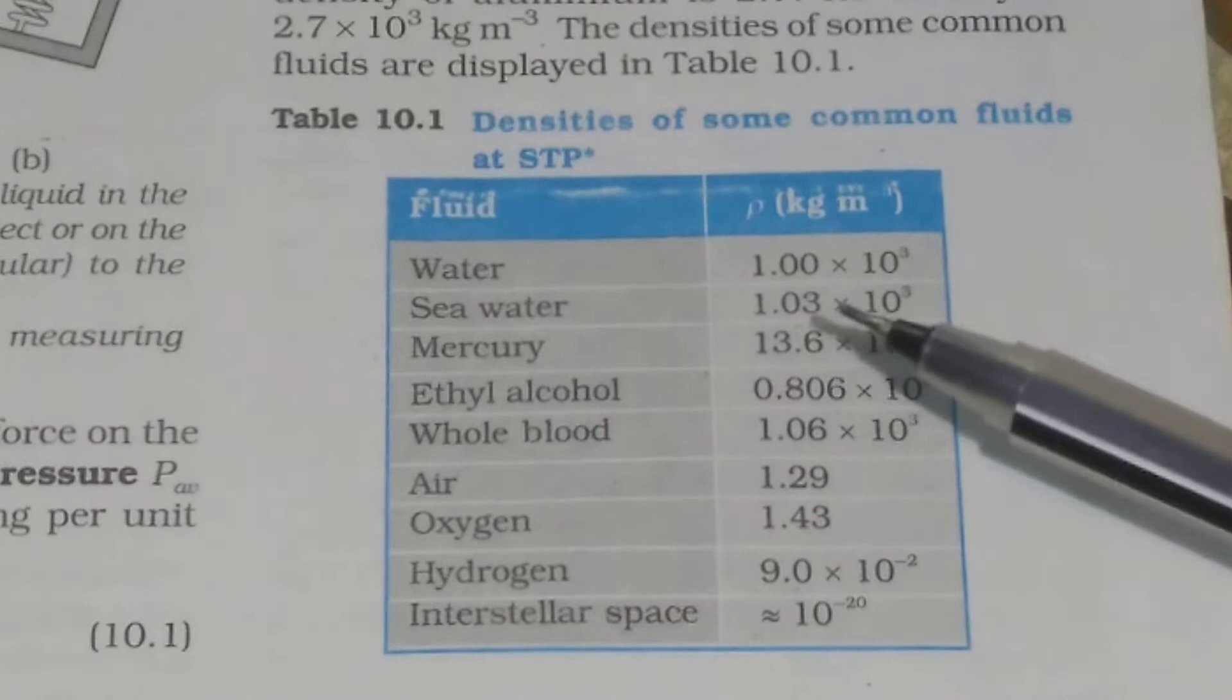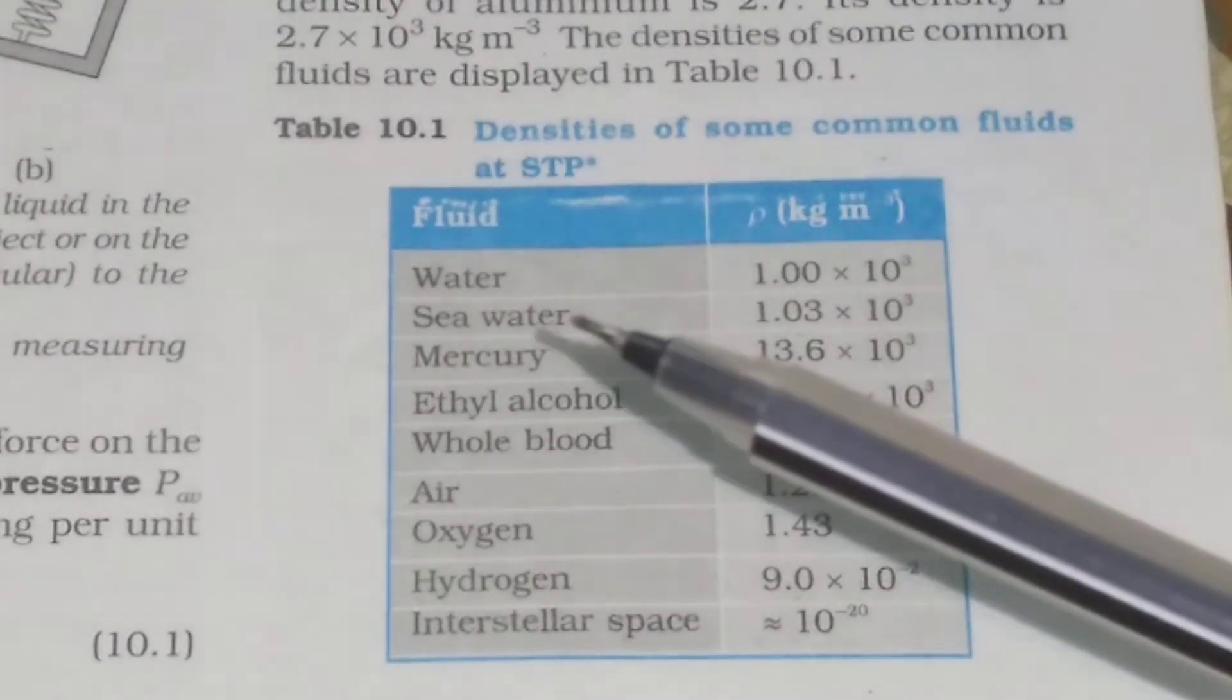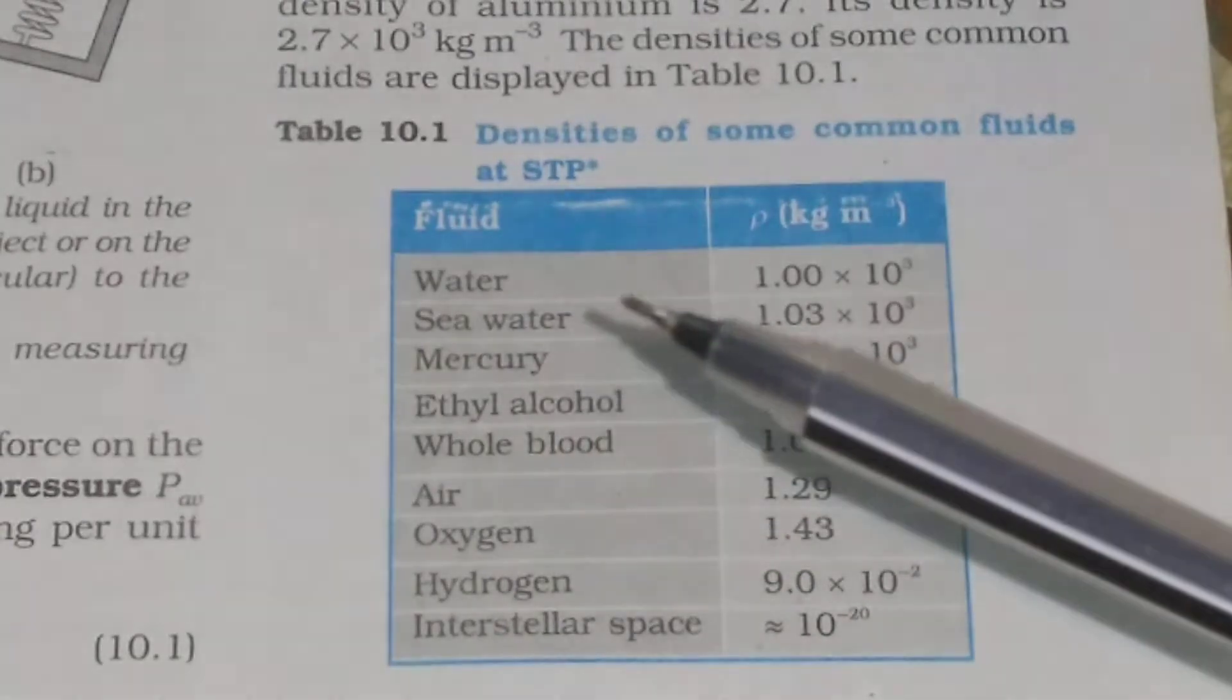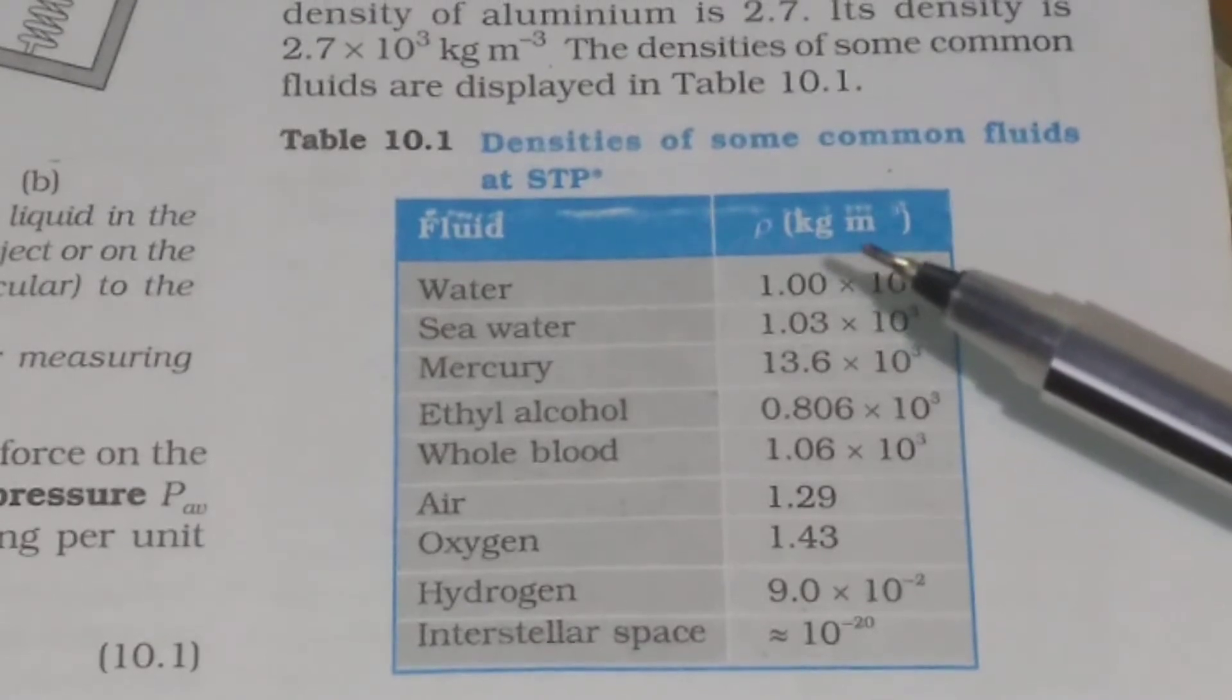In this table, the densities of some common fluids at STP is given. For example, fluid like water, its density is 10 to the power 3 kg per meter cube.